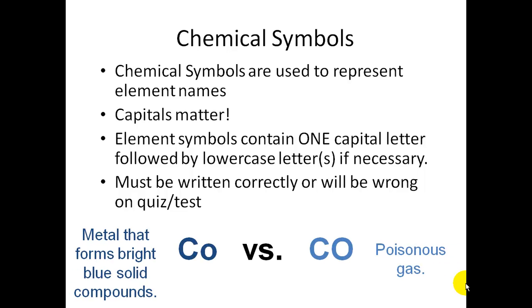For example, if I ask you for the chemical symbol of cobalt, the correct answer is on the left. Cobalt is a capital C and then a little O, and cobalt is a metal that forms bright blue solid compounds. If you messed up and you wrote the capital O, then you are writing the symbol for a compound, not an element, and that is a poisonous gas. So you must write it precisely.